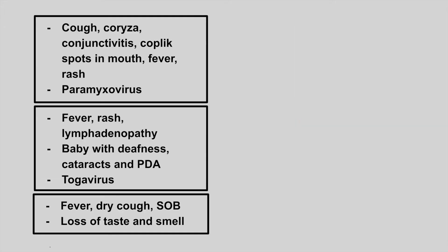The next patient comes in with cough, coryza, conjunctivitis, Koplik spots in the mouth, a fever, a rash, and this virus belongs to paramyxoviruses. This is measles. Look out for all the C symptoms: cough, coryza, conjunctivitis, and Koplik spots. Coryza just means a runny nose.